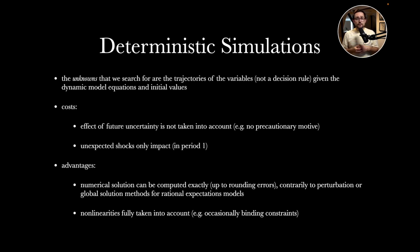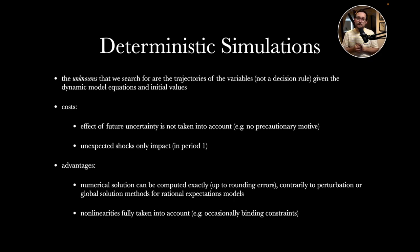There is no decision rule that I need to compute and I don't need to take uncertainty into account. The unknowns we search for, mathematically speaking, are trajectories for the variables of my model — not a decision rule. Given my dynamic model equations, initial values, and a certain shock scenario, I want to find values for all my endogenous variables over a certain period of time. The only surprise that happens in the model is on impact — that is where unexpected shocks occur and agents start to react optimally.